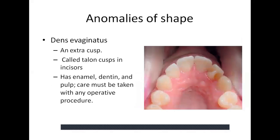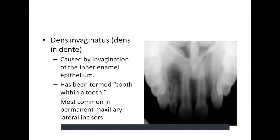Regarding anomalies of shape: dens evaginatus is an extra cusp called the talon's cusp, which has enamel, dentine, and pulp. Care must be taken when undertaking any operative procedures. Dens invaginatus, or dens in dente, is caused by invagination of the inner enamel epithelium — termed tooth within tooth — and is most common in the permanent maxillary lateral incisor. If enamel and dentine are not formed correctly, direct communication from the oral environment with pulp tissue can occur. Treatment is preventive — a small restoration or sealant may be placed to prevent pulpal involvement.